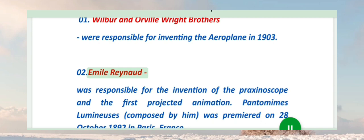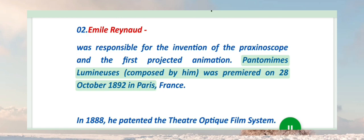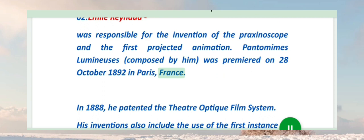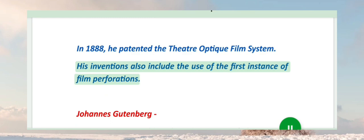Emile Reynolds was responsible for the invention of the praxinoscope and the first projected animation. Pantomimes Lumineuses composed by him was premiered on 28 October 1892 in Paris, France. In 1888, he patented the Theatre Optique film system. His inventions also include the use of the first instance of film perforations.